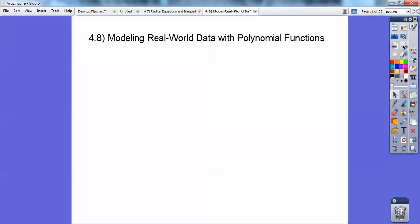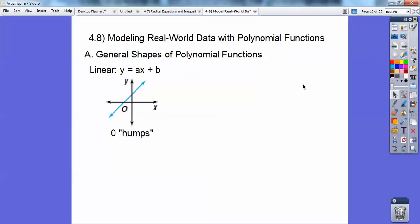So modeling real-world applications with polynomial functions. Here's general shapes. These are just general shapes of polynomial functions. Linear functions, a line doesn't have any humps, has zero humps. Notice the degree of a linear function is one, because there's an imaginary AX to the first power right there.